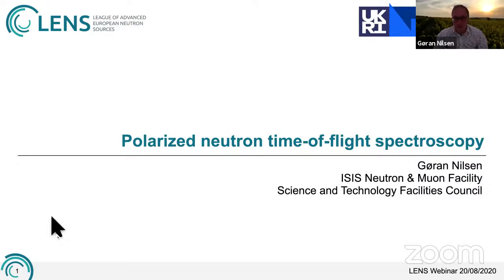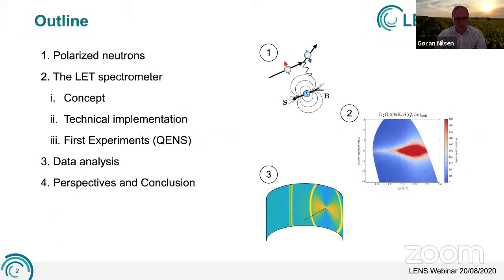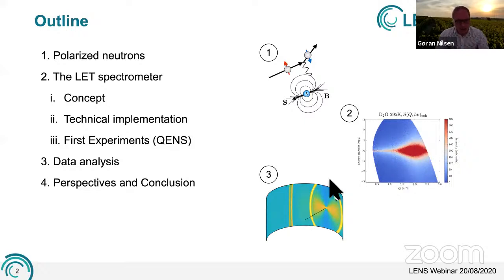Thank you very much, Christoph, for the introduction, and thanks to the organizers of this series for giving me the chance to talk. Today I'll be telling you a little bit about polarized neutron time-of-flight spectroscopy. I'll start with a brief discussion on what polarized neutrons are and how they enhance our experiments. Then I'll talk about the LET spectrometer, describing some of the design choices we made, leading up to the first experiments on polymers and liquid D2O. Following that, I'll discuss new data analysis approaches to get the most out of powder sample data, and finish with perspectives on potential future science drivers and their implications for instrumentation and software developments.